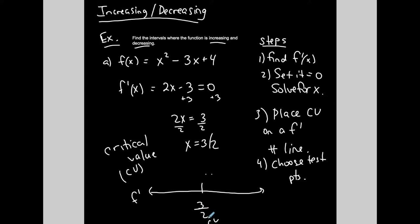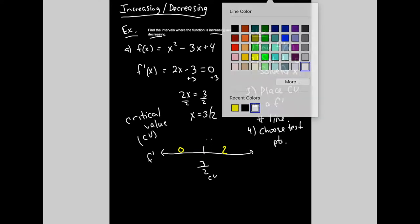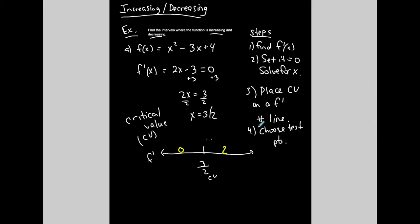Choose test points to the left and to the right of your critical value. Let's pick a number to the left of 3 halves — 0, since 3 halves is 1.5. To the right, how about 2? Once I use these test points, they're done — I throw them away. I just want to use them to determine what's happening with the first derivative.